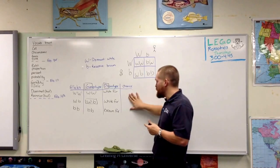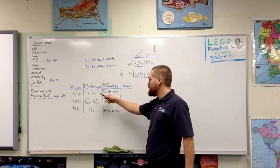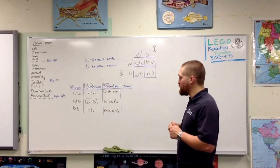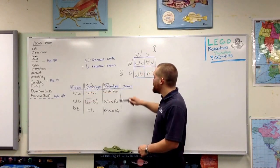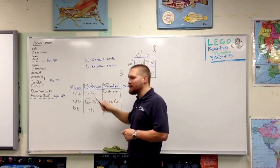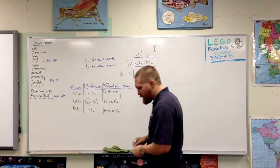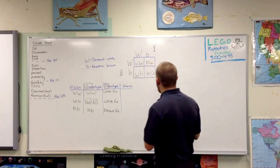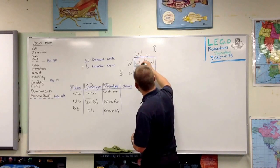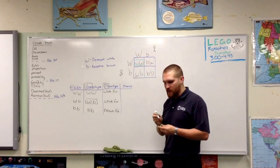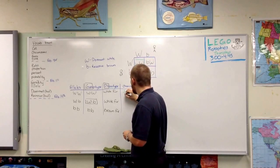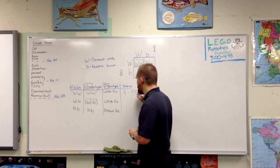Now we can look back at our chart and figure out what are the chances of having each genotype. What are the chances of this offspring being born with two dominant alleles for white fur? I have one, two, three, four squares — only one of them has dominant, dominant. So that's a one out of four chance, or 25%.